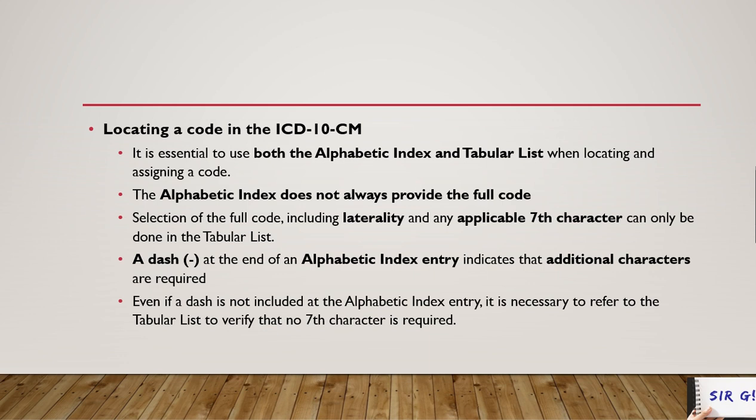A dash at the end of an alphabetic index entry indicates that additional characters are required. You can commonly see this dash in the table of neoplasm and the table of drugs. In the alphabetic index, sometimes you can see a check sign meaning additional characters are still required even if a dash is not included. It is necessary to refer to the tabular list to verify that no seventh character is required, because you never know unless you verify in the tabular list.